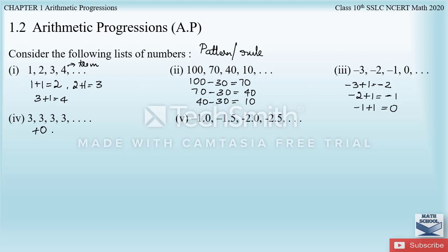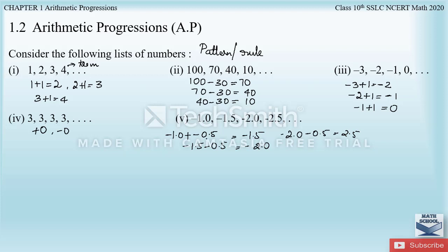In the fourth list, 0 is either added or subtracted to obtain the same number each time. In the fifth example, we are adding minus 0.5 each time: starting value gives minus 1.5, then minus 2.0, then minus 2.5. So minus 0.5 is the fixed number added to get the succeeding terms.